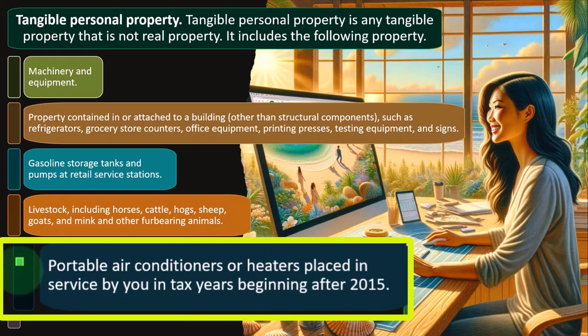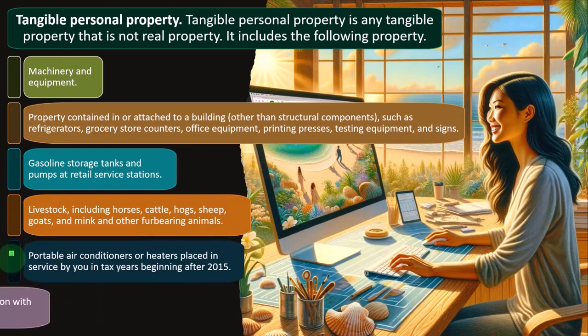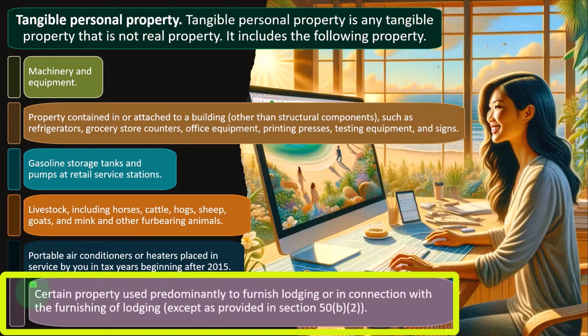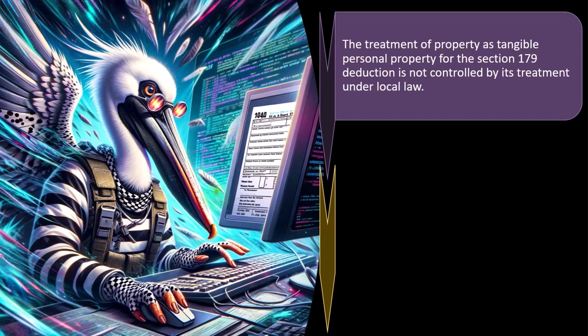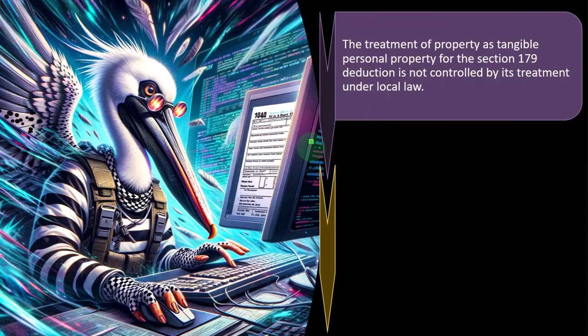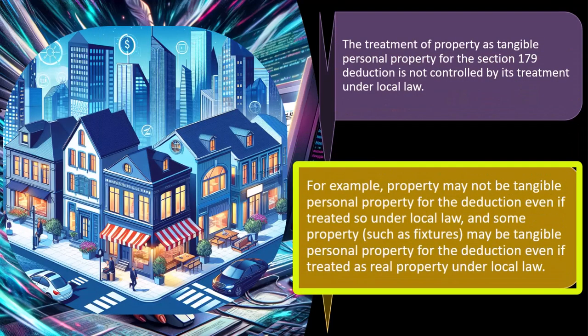Portable air conditioners or heaters placed in service in tax years beginning after 2015; certain property used predominantly to furnish lodging or in connection with the furnishing of lodging, except as provided in Section 50(b)(2). The treatment of property as tangible personal property for Section 179 deduction is not controlled by its treatment under local law.